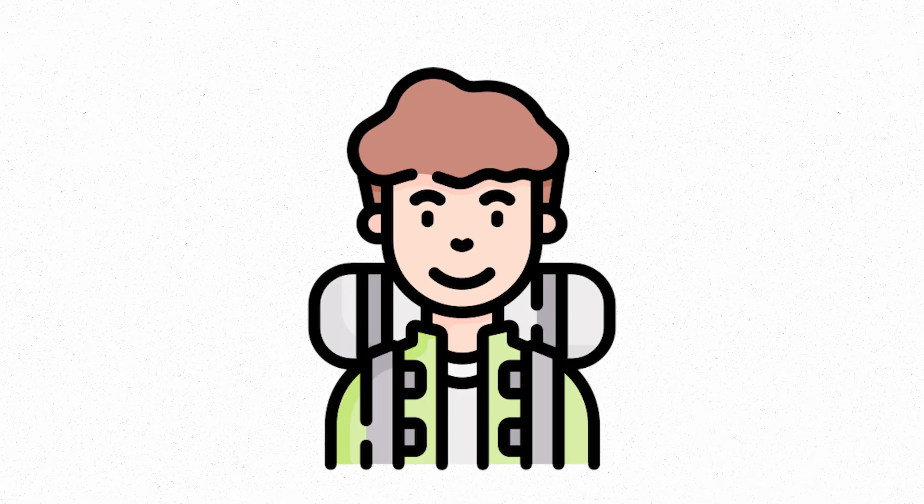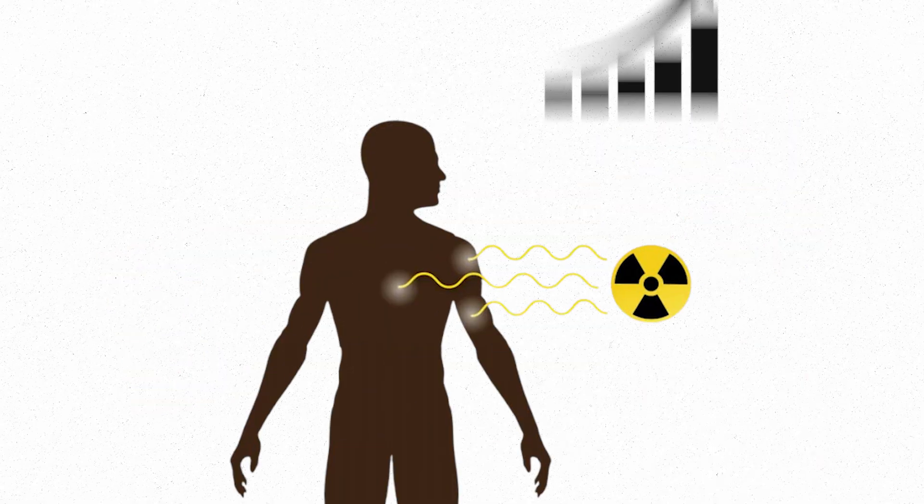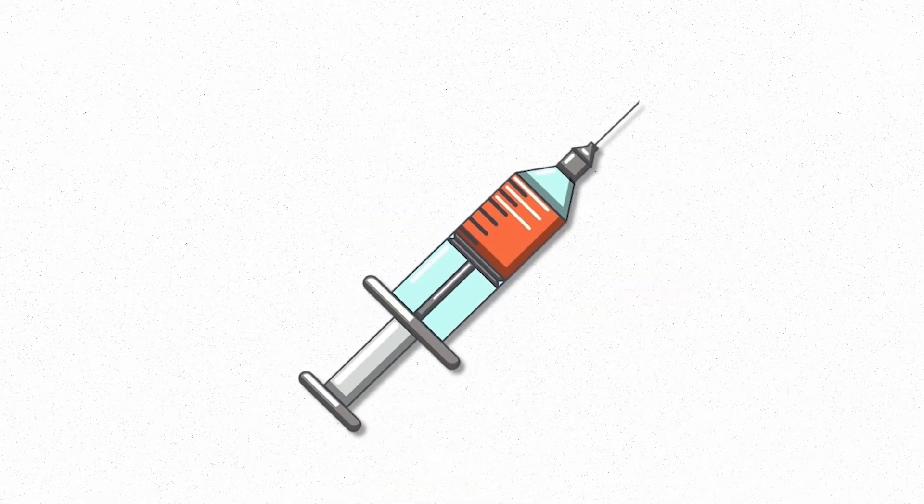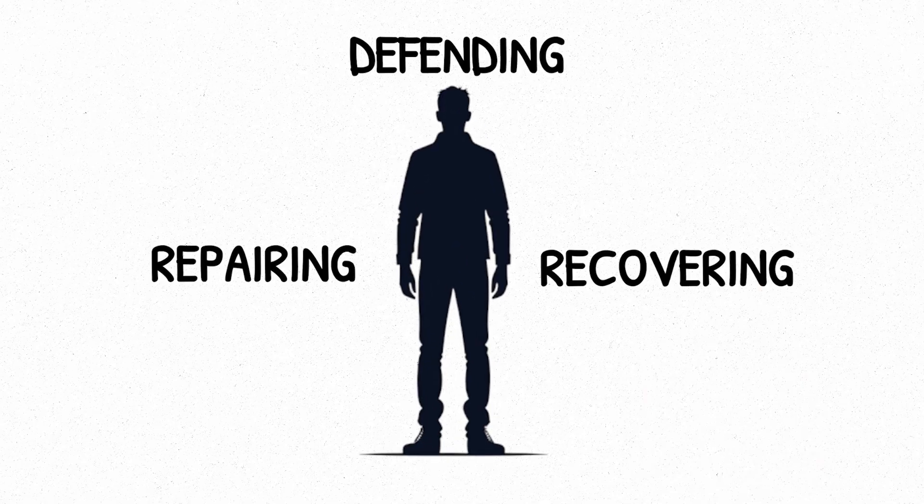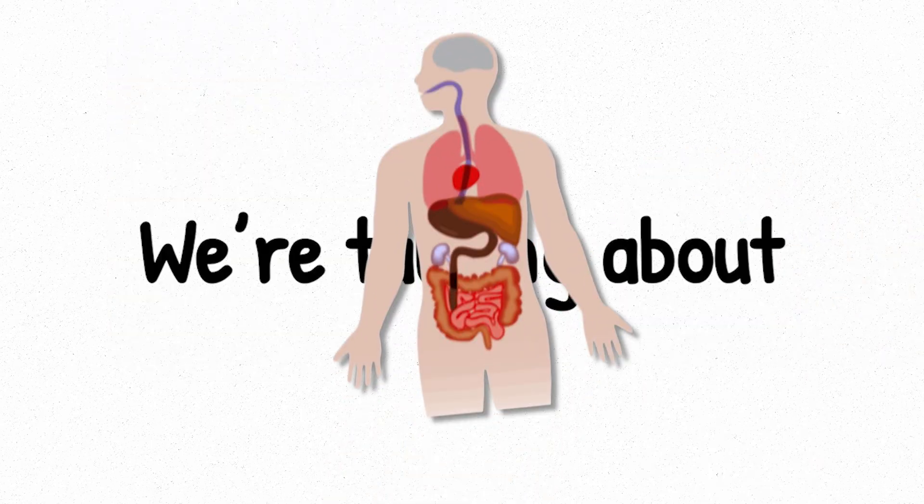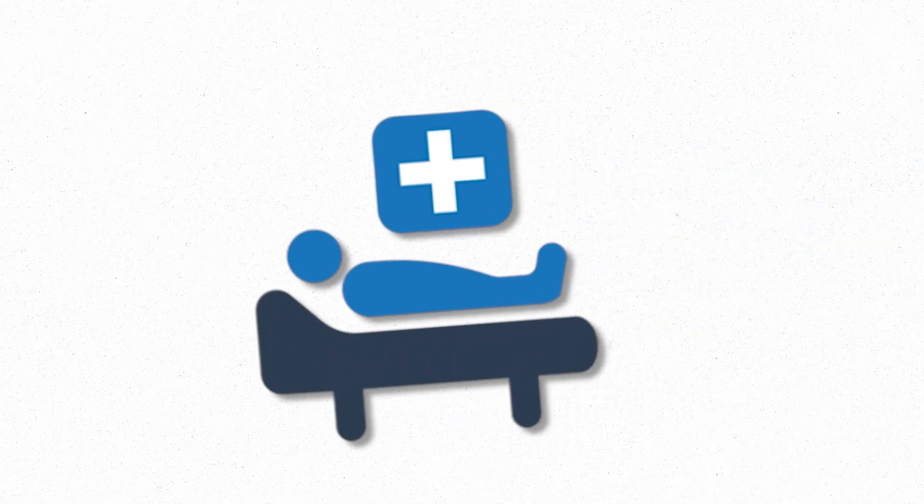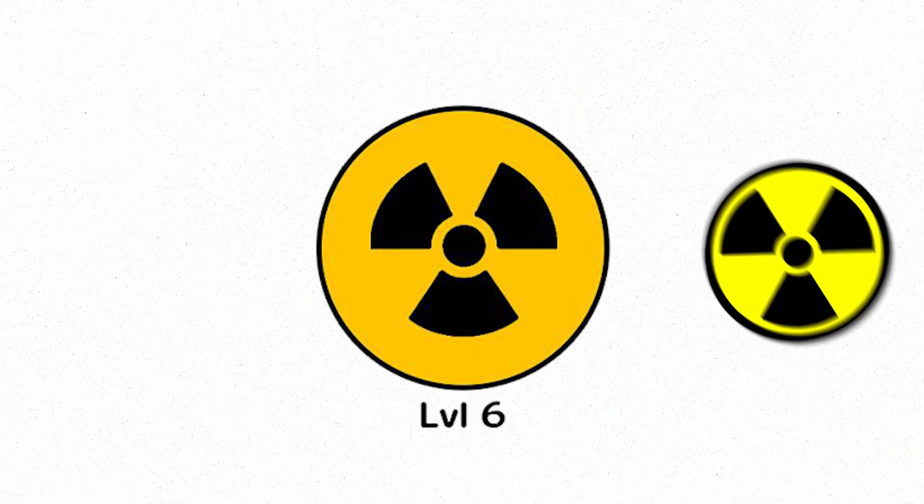At this level, survival is still possible, but not guaranteed. The risk of long-term health damage increases significantly, especially if the dose is received all at once. The danger isn't just what the radiation hits. It's what it prevents your body from doing. Repairing, defending, recovering. This is the turning point. We're no longer talking about rare side effects or elevated risks. We're talking about biological systems and failure, where every hour matters and treatment becomes critical. Level six is the threshold where radiation becomes a true medical emergency. And what comes next? Pushes the body beyond its natural limits.